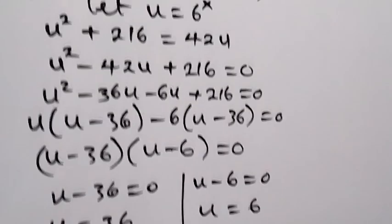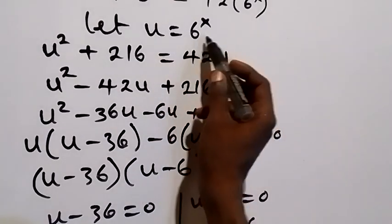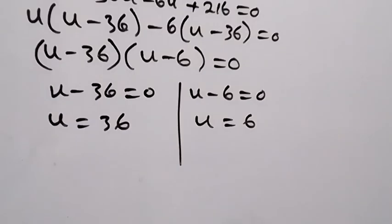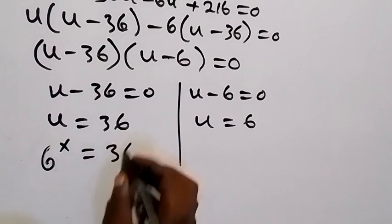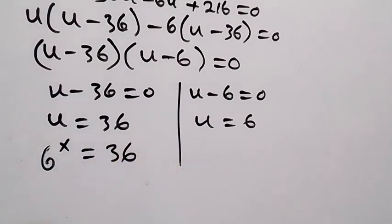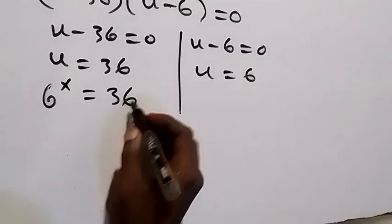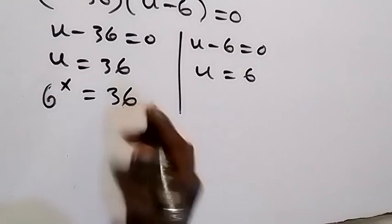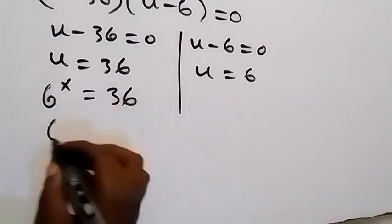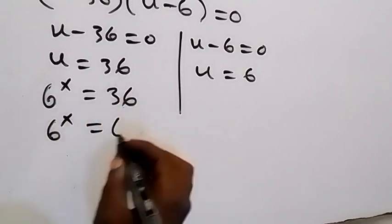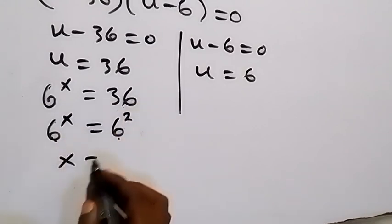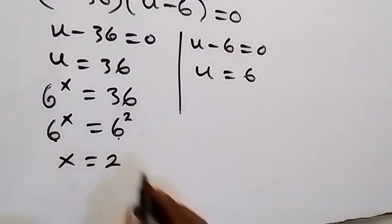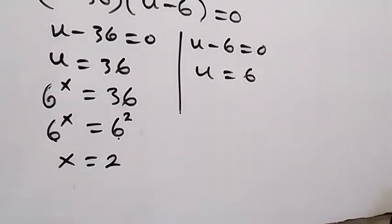Recall that u equals 6 raised to power x. For the first case, 6 raised to power x equals 36. We can express 36 as 6 squared, so 6 raised to power x equals 6 raised to power 2. Since the bases are equal, x equals 2.